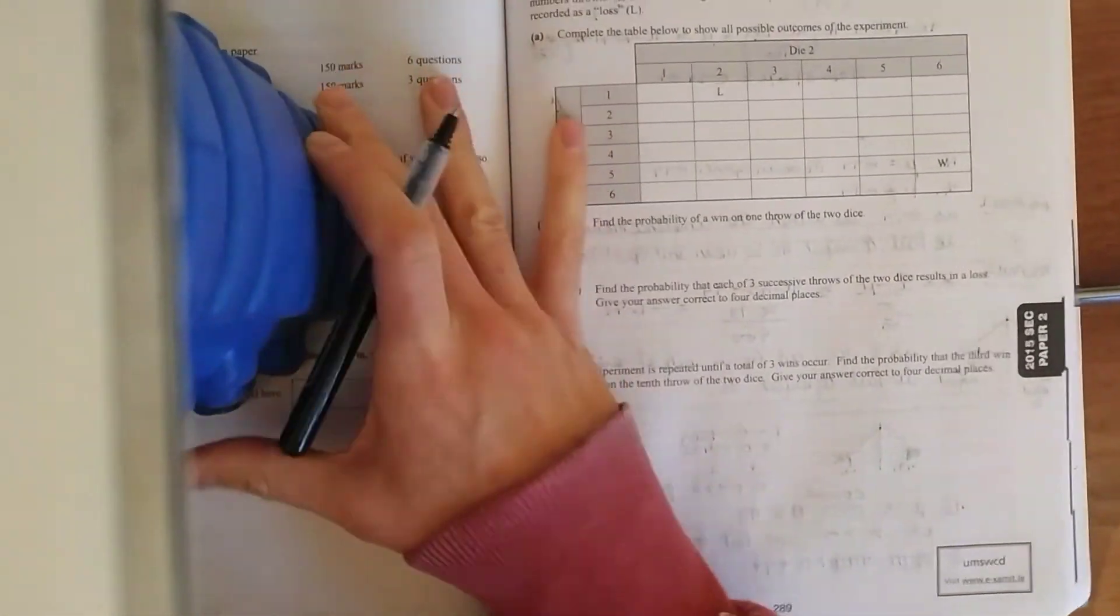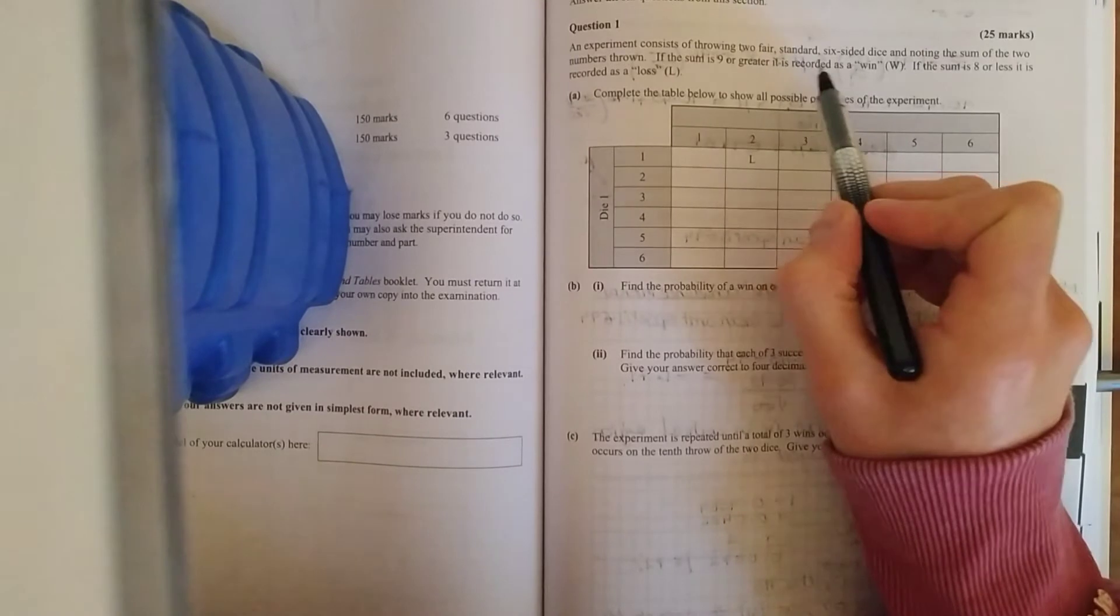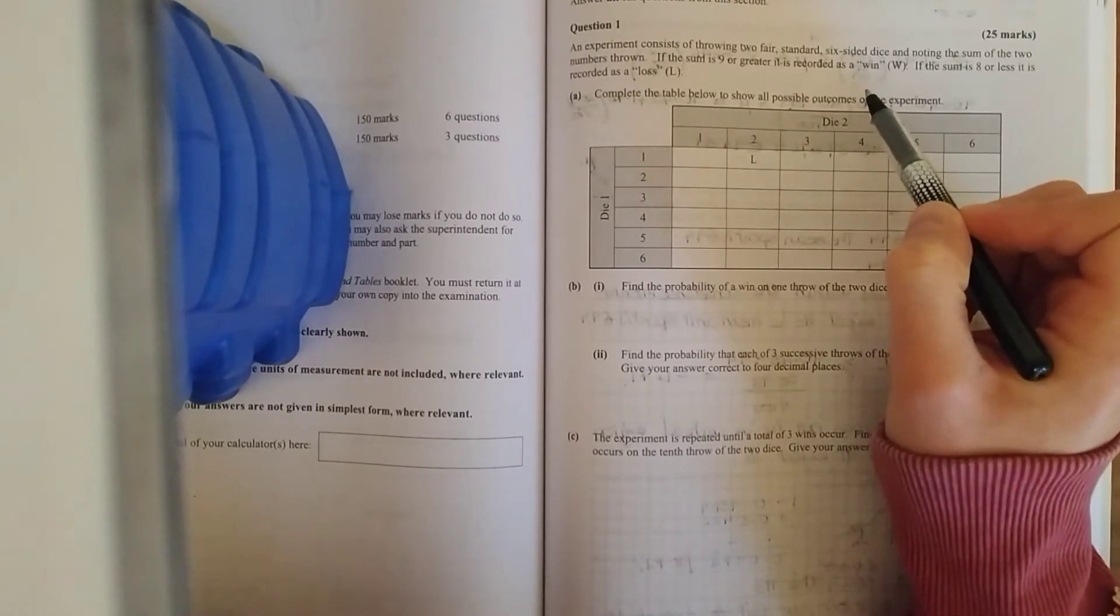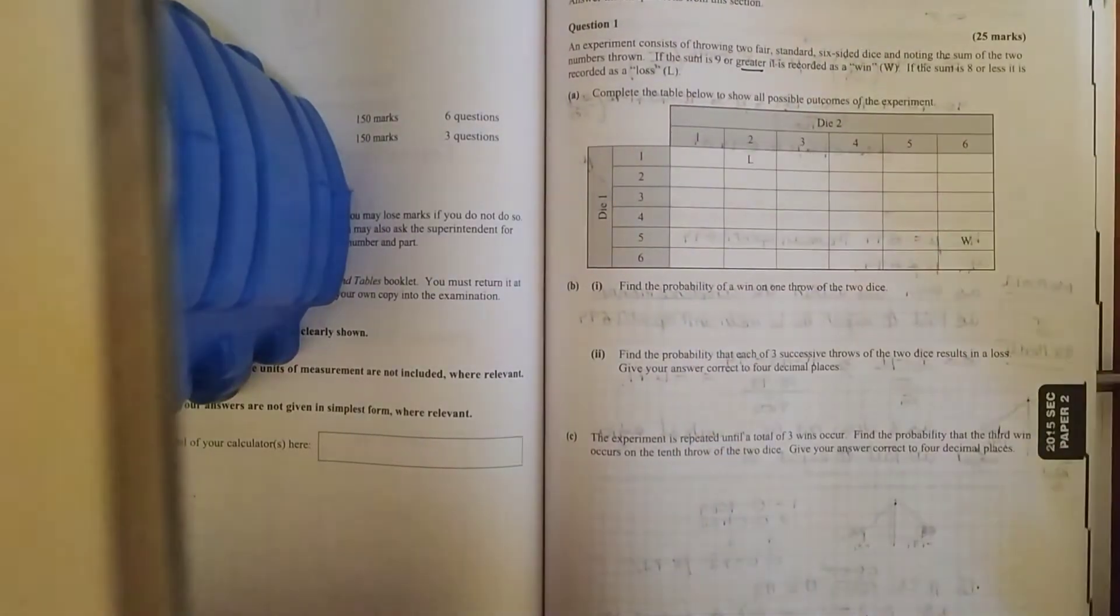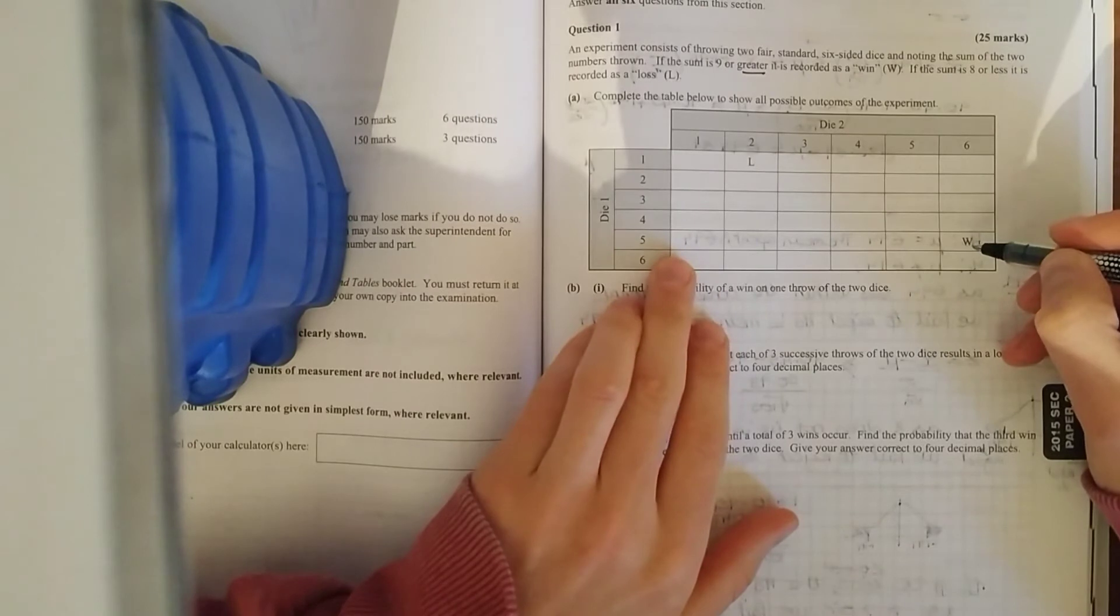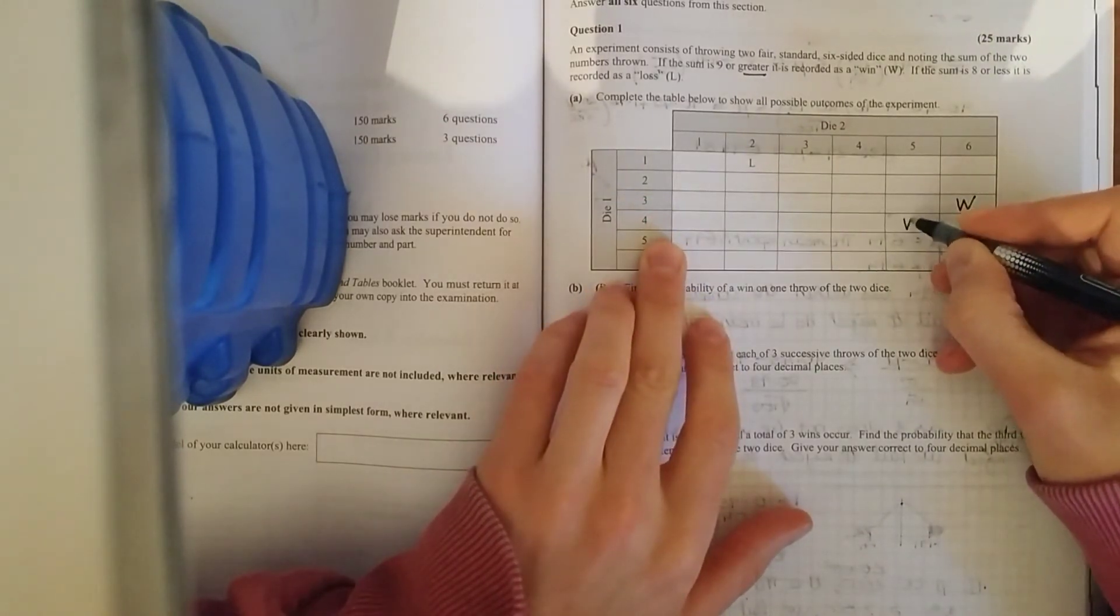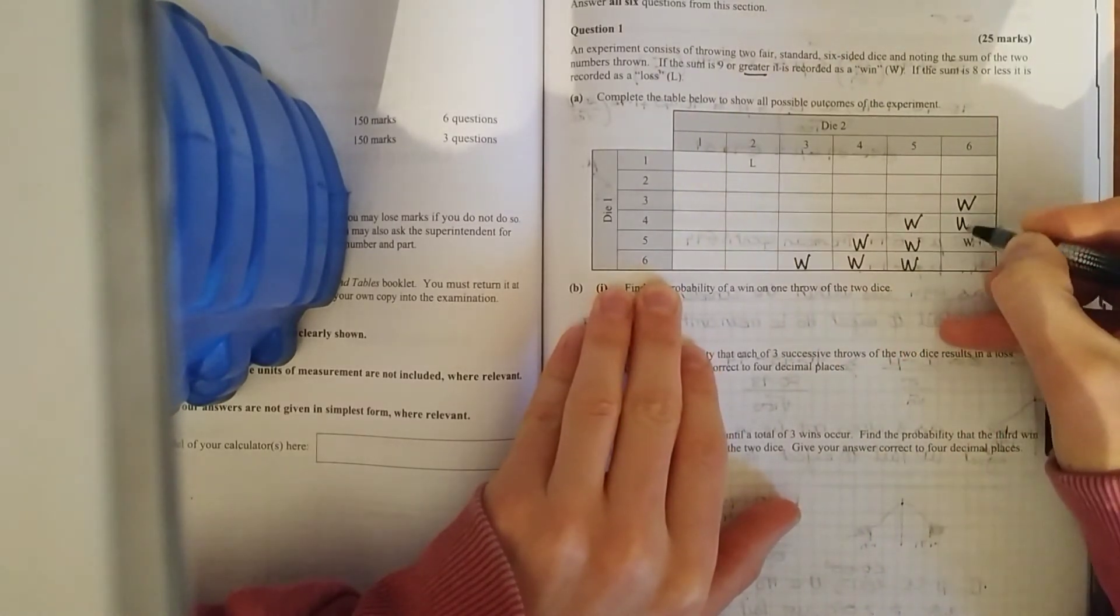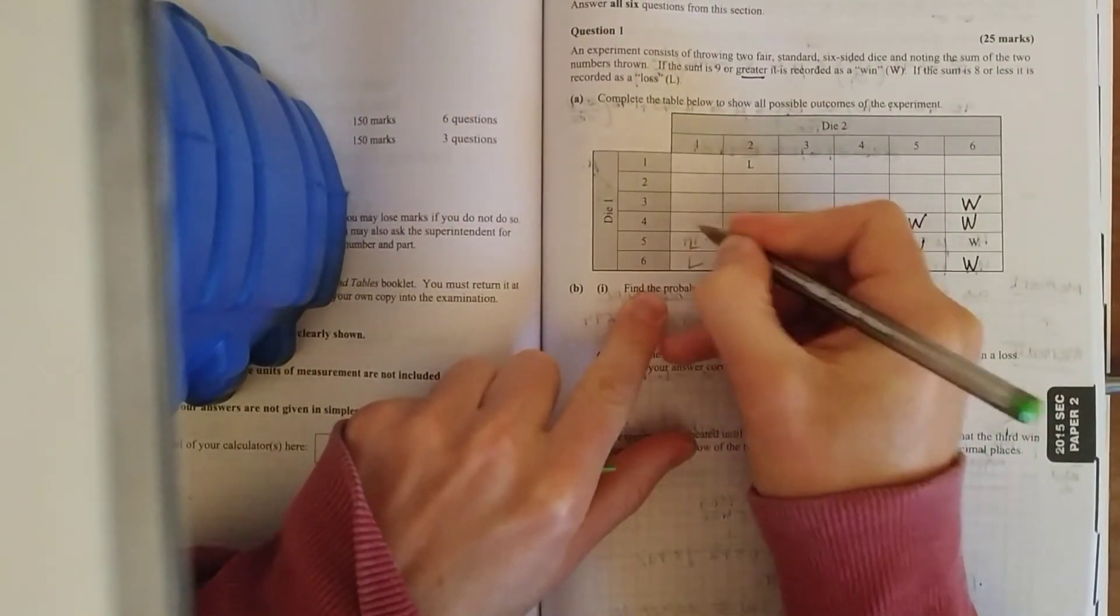Let me do the first one while we're at it. So question one here. An experiment consists of throwing two fair standard six-sided dice. Notice the sum of the two numbers. If the sum is 9 or greater, it's regarded as a 1. So 9 or greater, that's why they got a 1 at 6, 5, because you get 11. So 6, 3 is a 1. 5, 4 is a 1. 4, 5, 6, 3. All these other ones are going to be 1s. And that means that these other ones are going to be losses. That's 1, 1, 6, 1. Handy marks there.